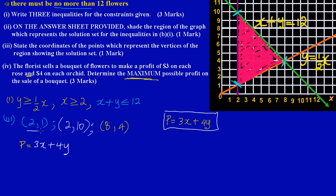Using the first coordinate (2, 1): P = 3(2) + 4(1) = 6 + 4 = 10. So the profit at the first vertex is ten dollars.